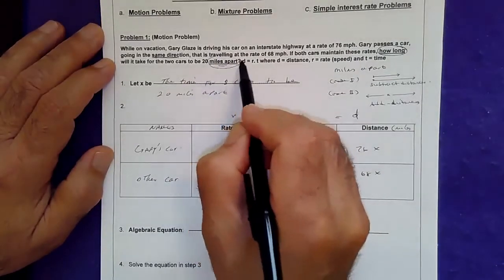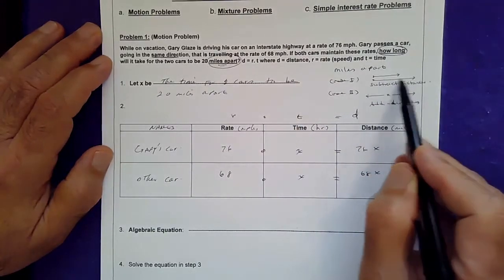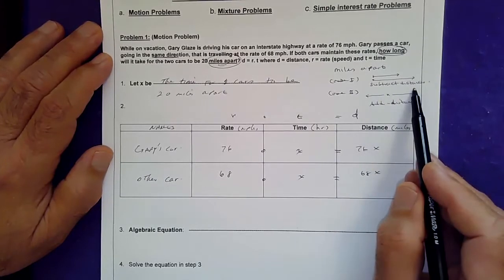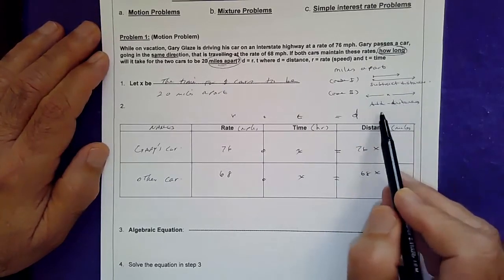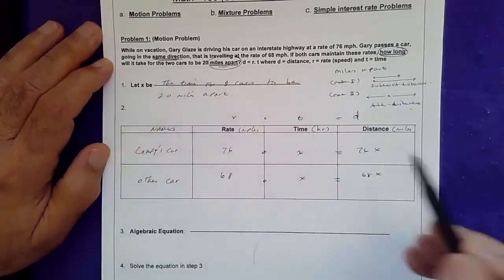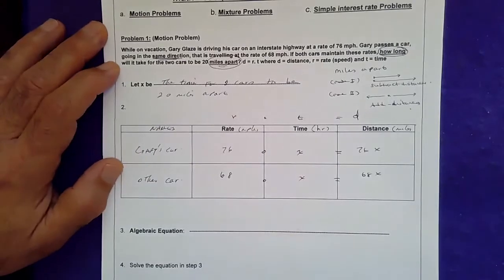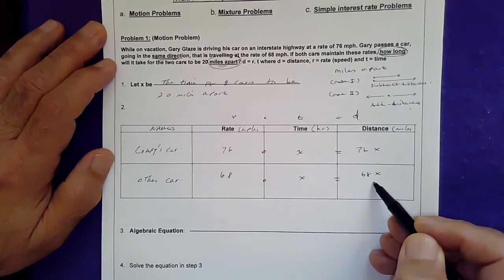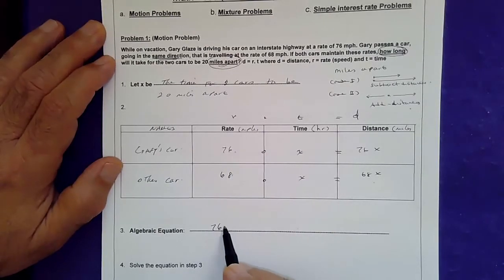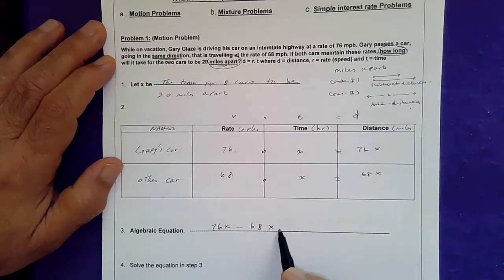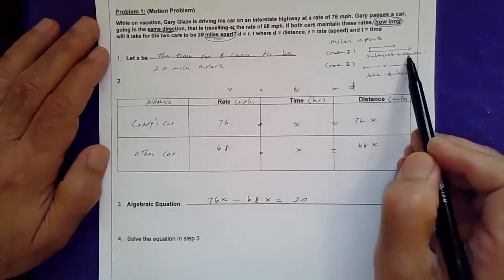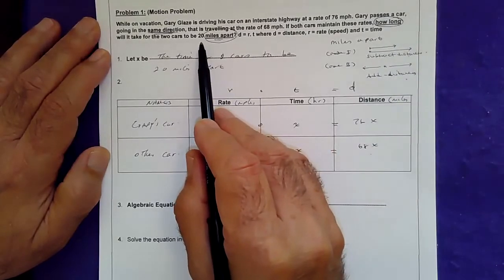Since the cars travel in the same direction, we subtract the distances. We subtract the slower car's distance from the faster car's distance: 76x minus 68x equals 20. We set the difference of distances equal to how many miles apart they are.